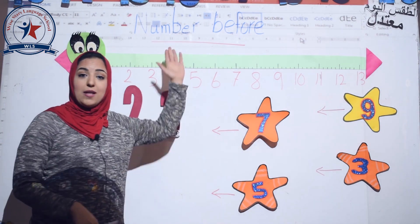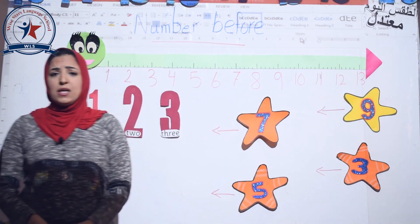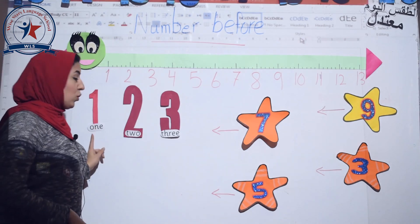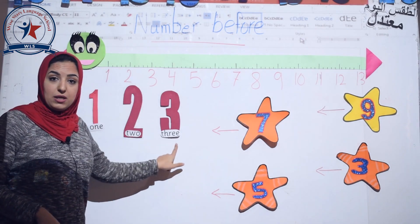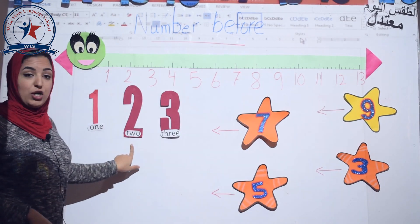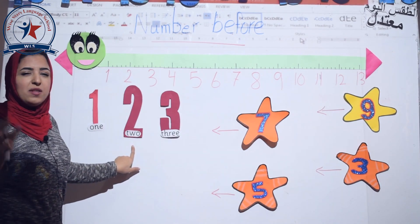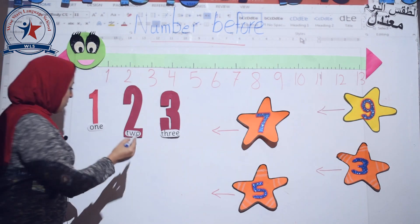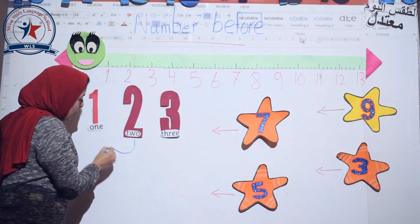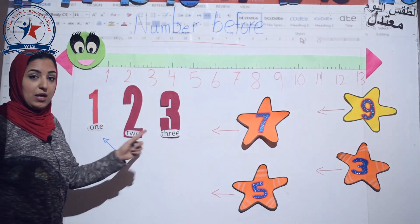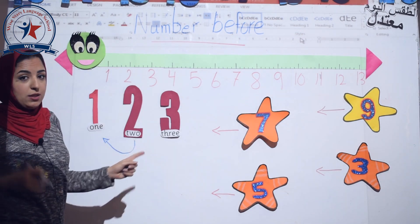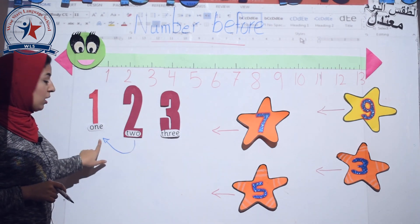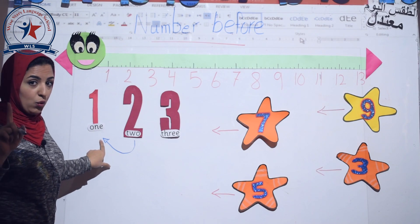We are going to talk about number before. What is the meaning of number before? Let's see. I have here one, two, three. Let's look at number two. What is the meaning of before? Before means the number that stands behind. So what is the number before number two? It's number one.